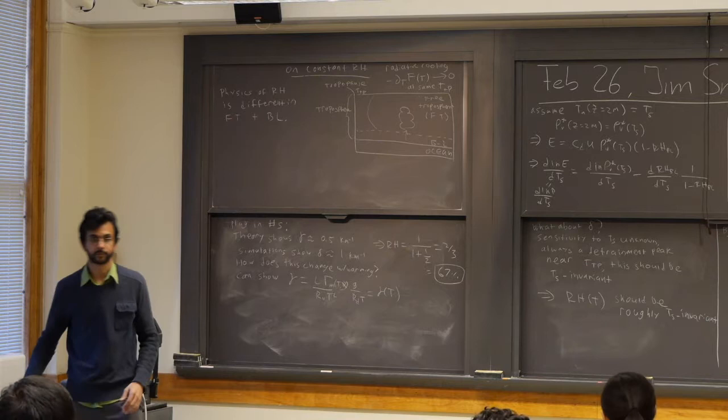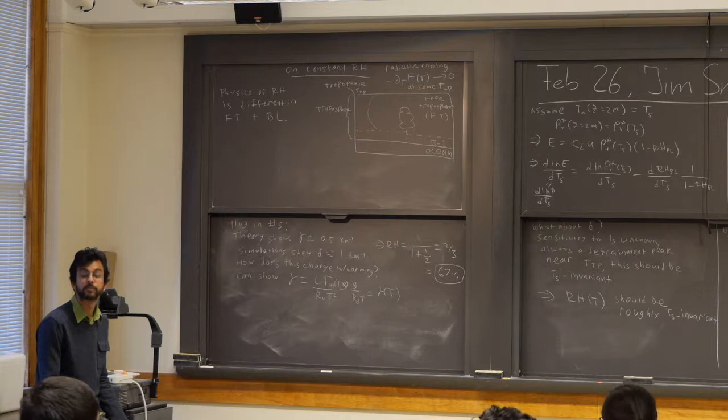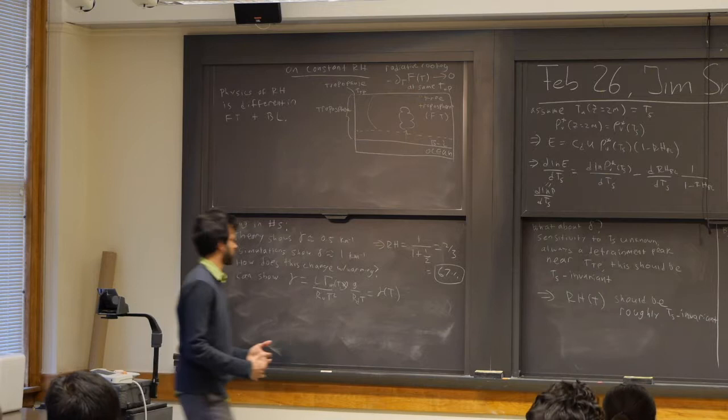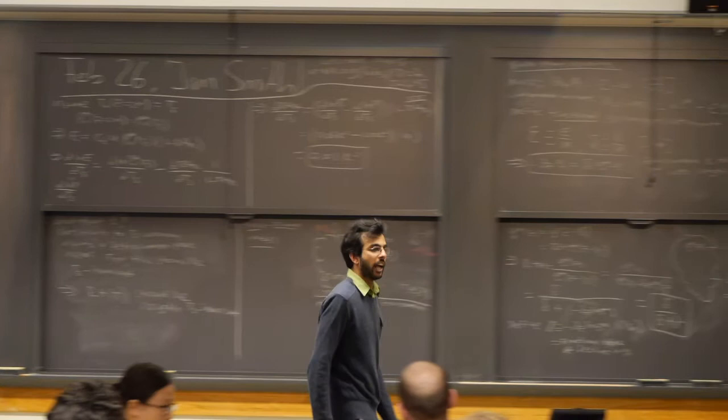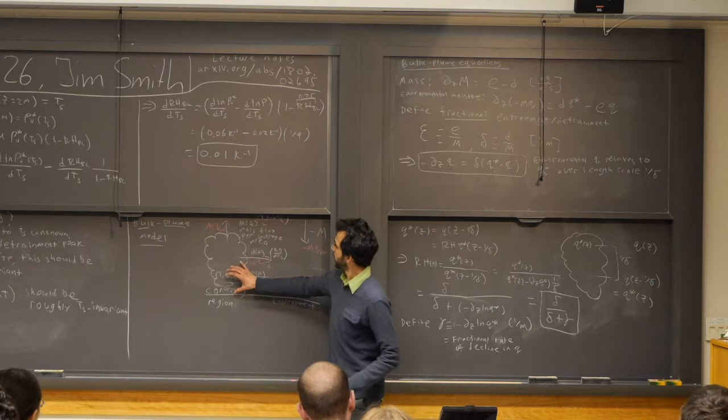To circle back to our original question: constant relative humidity means different things in the boundary layer and the free troposphere. In the boundary layer you can argue there should be a small increase — on the order of 1% per Kelvin — but it's small and negligible. In the free troposphere, there's a vertical profile, and as long as you work in temperature coordinates, it should not be changing with surface temperature. That's the meaning of constant relative humidity with climate change. I'll stop here and take questions.